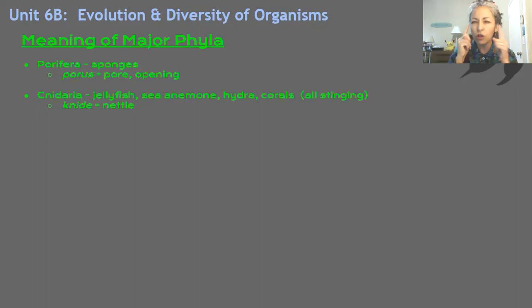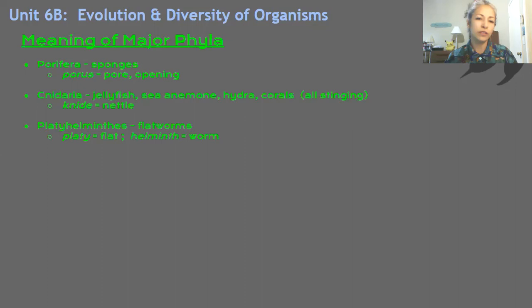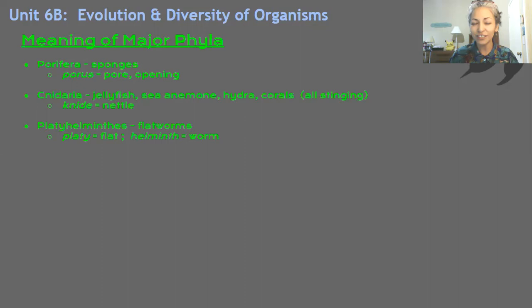How about Platyhelminthes? These are flatworms. The word 'platy' actually means flat, and 'helminth' means worm. So Platyhelminthes is flatworms — platty, flatty. See how this works? Etymology is great. I hope that this will intrigue you and it may build a strength in you in the future.